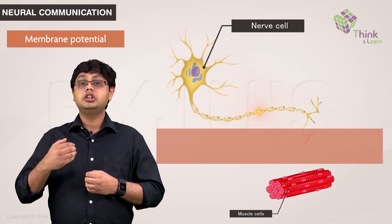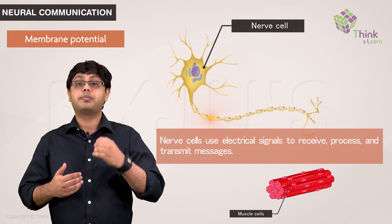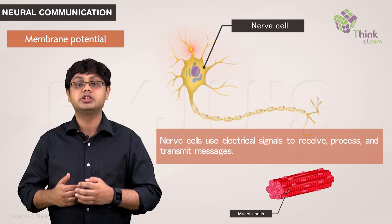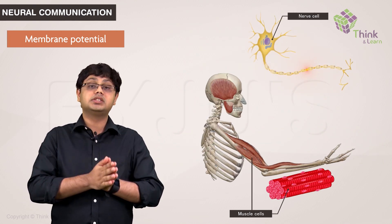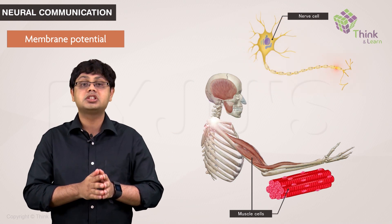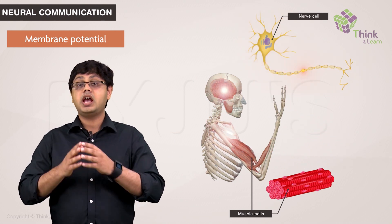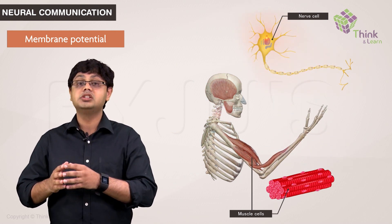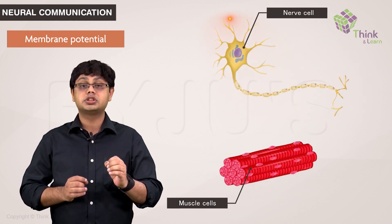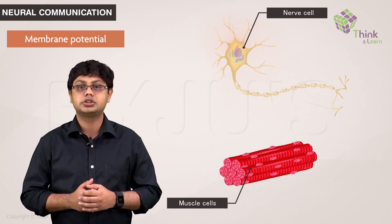Nerve cells use these electrical signals to receive, process, and transmit messages. In muscle cells, these electrical signals initiate contraction. Thus, electrical signals are critical to the functioning of both the nervous system and the muscular system.